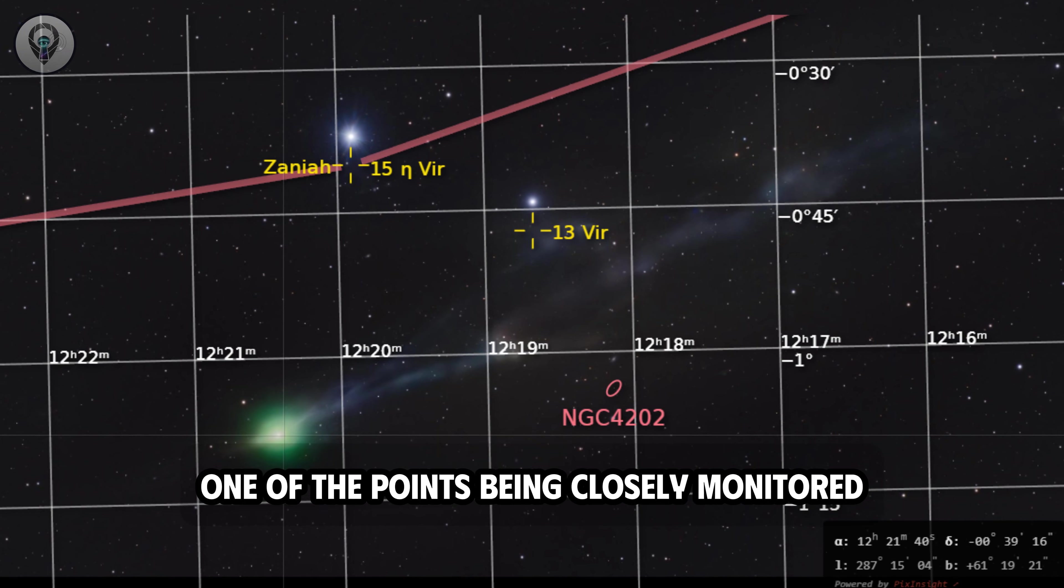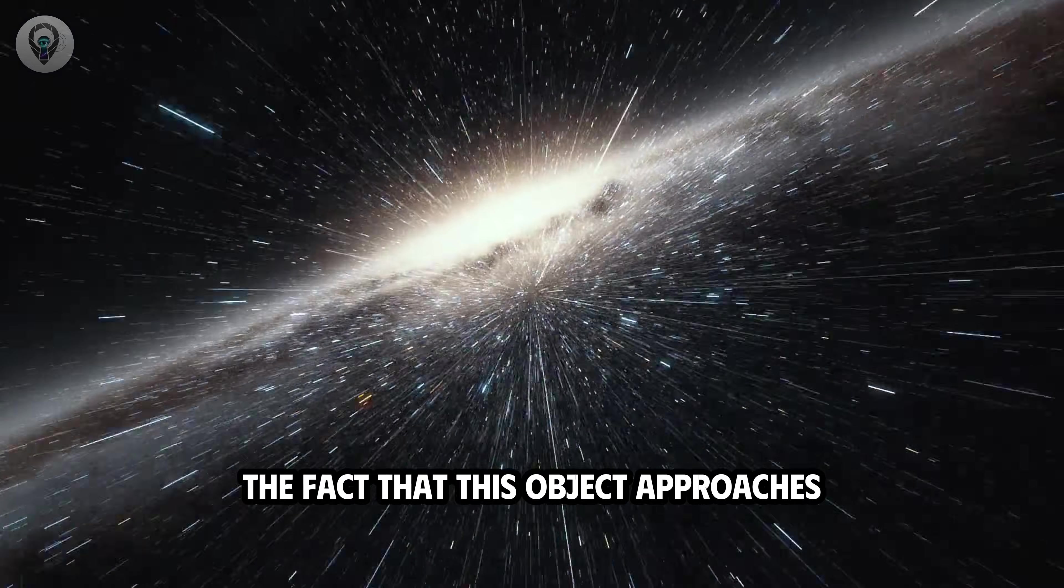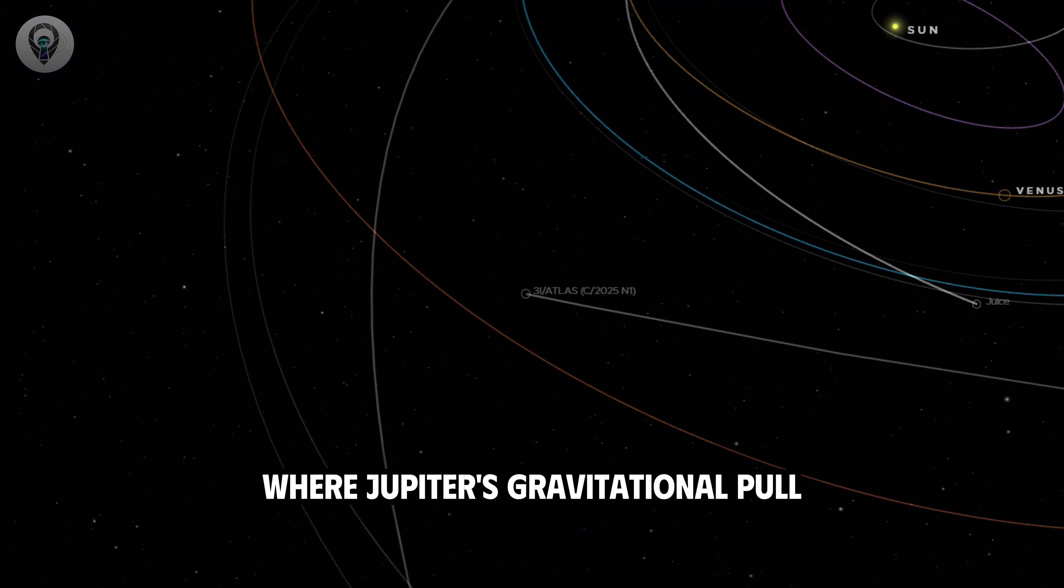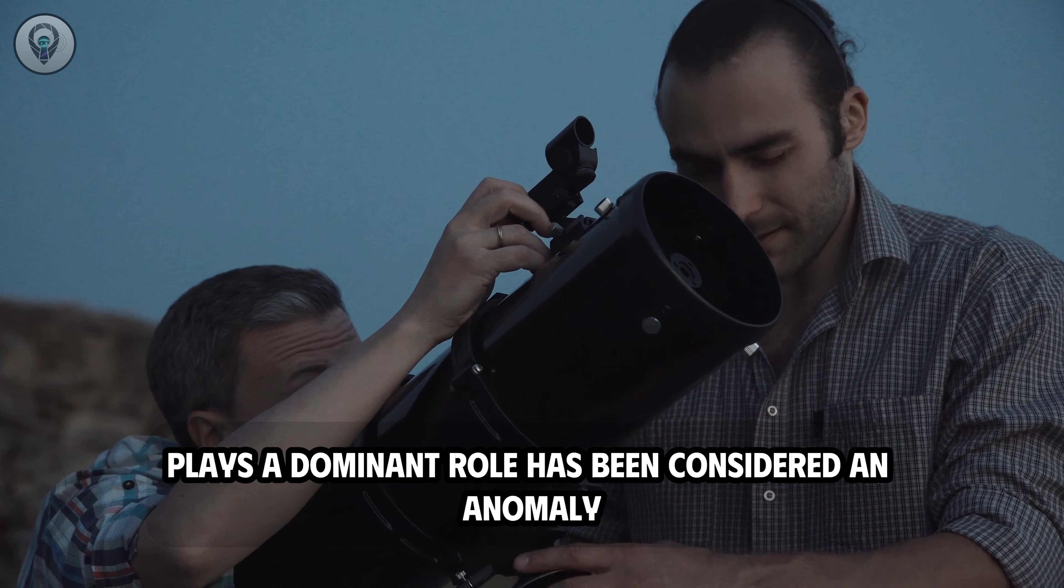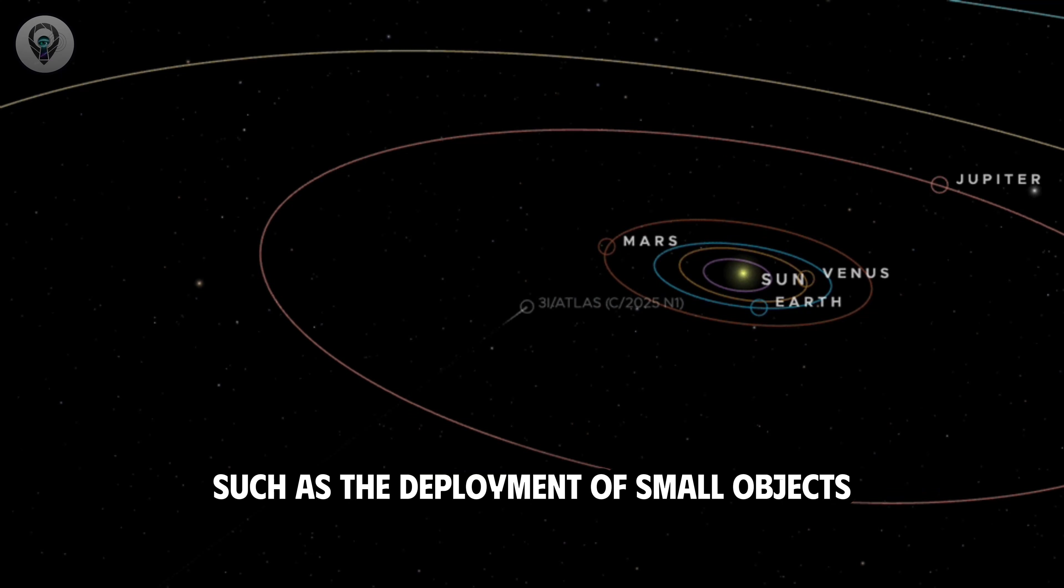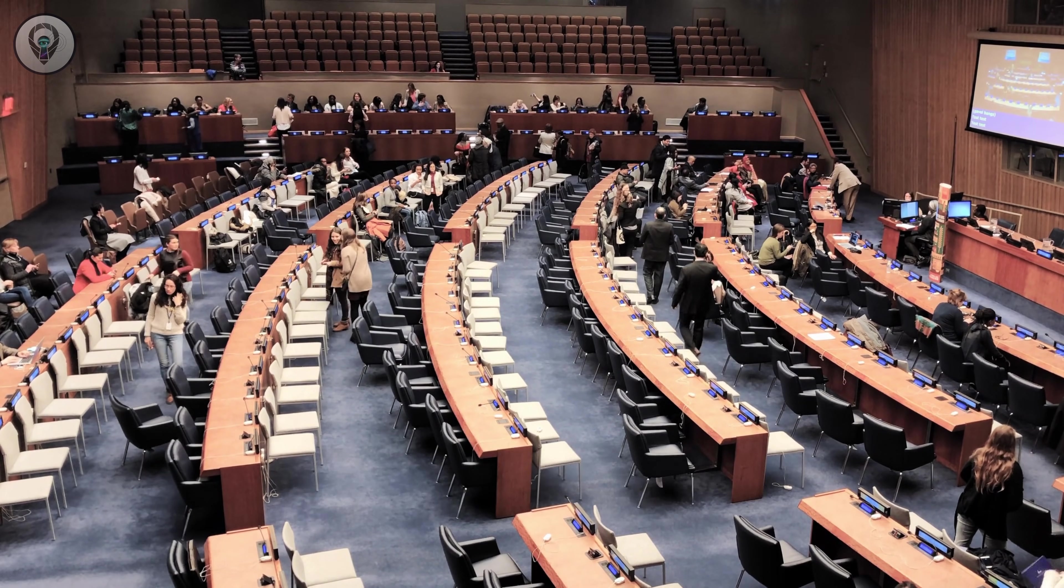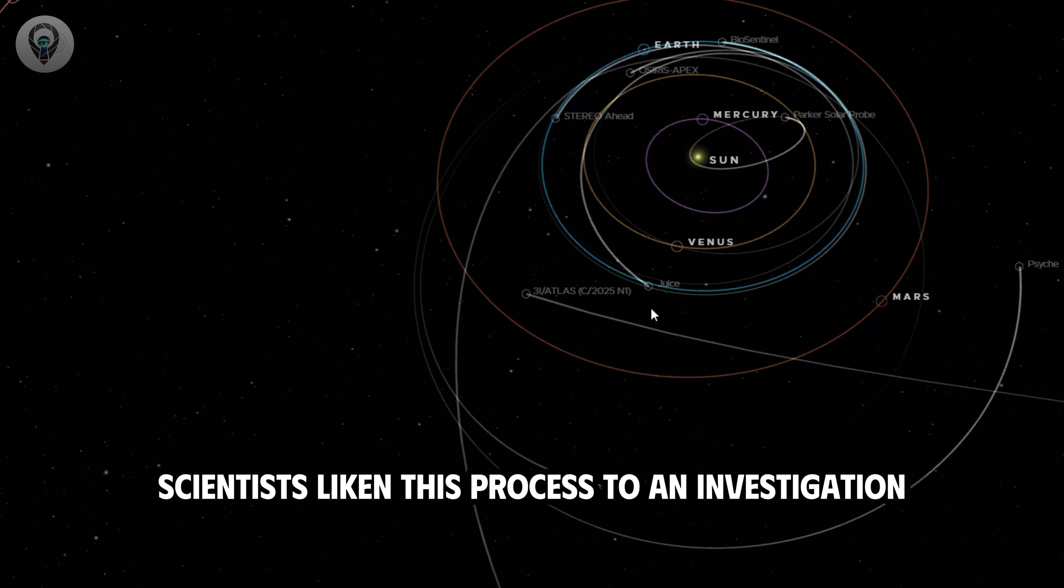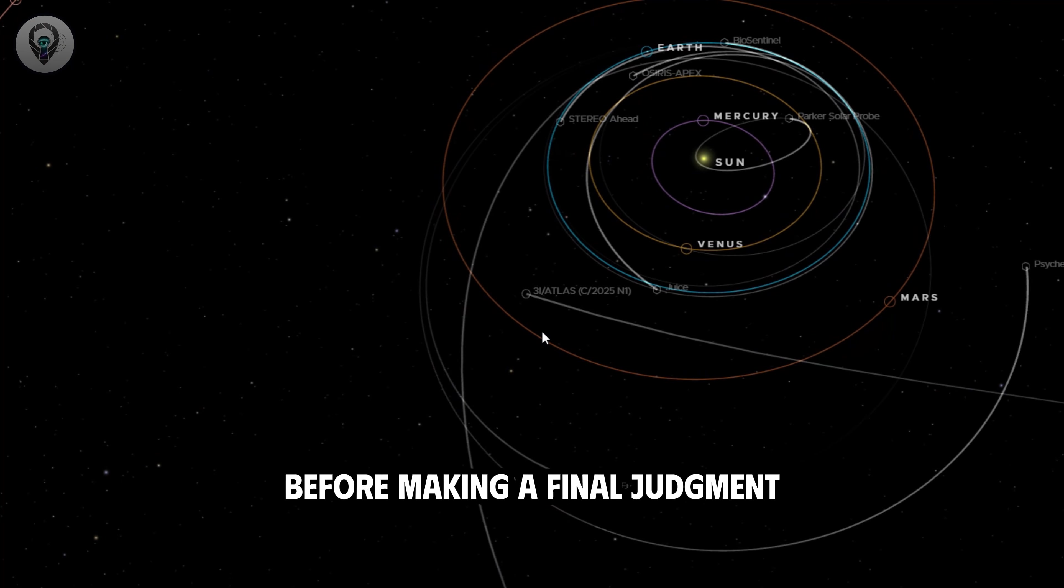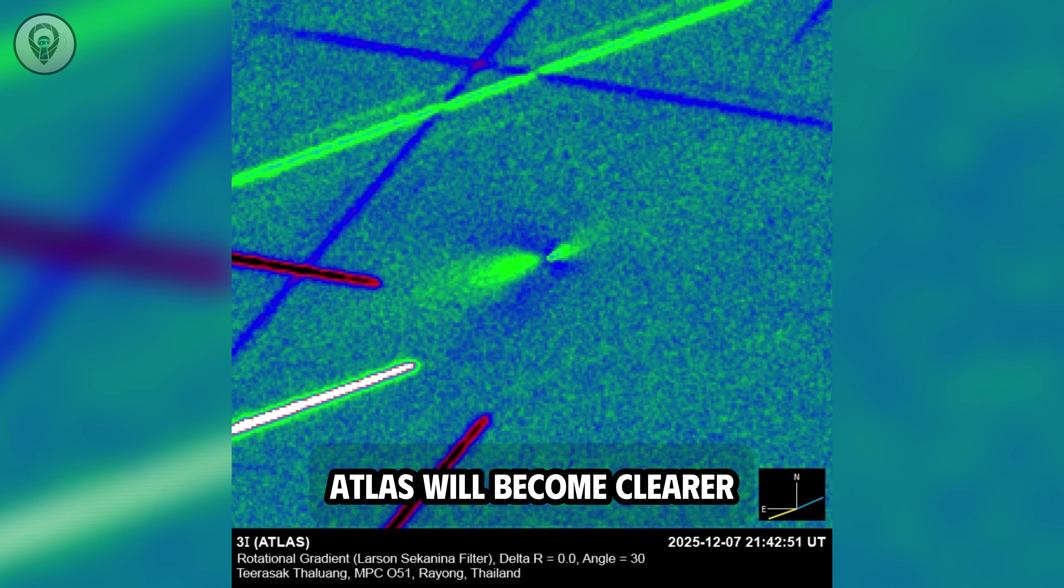One of the points being closely monitored is the orbit of Three-Eye Atlas as it passes near Jupiter. The fact that this object approaches at such an unusual distance, where Jupiter's gravitational pull plays a dominant role, has been considered an anomaly. In the event of more unusual behavior, such as the deployment of small objects at Jupiter's Lagrange points, that would be an almost unmistakable indication of technological advancement. Scientists liken this process to an investigation where every clue needs to be fully gathered before making a final judgment, rather than letting preconceived notions guide the conclusion. It is expected that within the next one to two months, once the crucial data is processed, the picture of the nature of Three-Eye Atlas will become clearer.